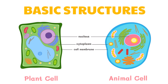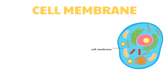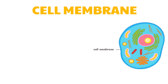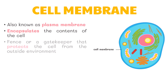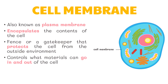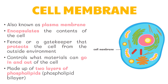The cell membrane, also known as the plasma membrane, encapsulates the contents of the cell. It acts like a fence or gatekeeper to protect the cell from the outside environment. It also controls what materials can go in and out of the cell. The cell membrane is made up of two layers of phospholipids, or a phospholipid bilayer.